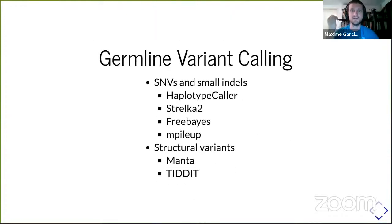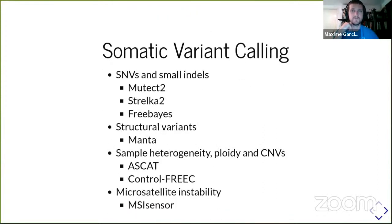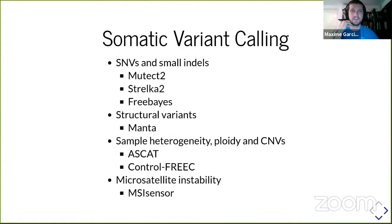After preprocessing, we do variant calling. For the germline part, we use HaplotypeCaller from GATK, Strelka2 from Illumina, FreeBayes and mpileup to resolve small indels and SNVs, and Manta and Tiddit to find structural variants. For somatic variant calling, we use Mutect2 from GATK, Strelka2, FreeBayes, and Manta for structural variants. We assess sample heterogeneity, ploidy, and copy number variation with ASCAT and ControlFREEC, and we have microsatellite instability information with MSIsensor.